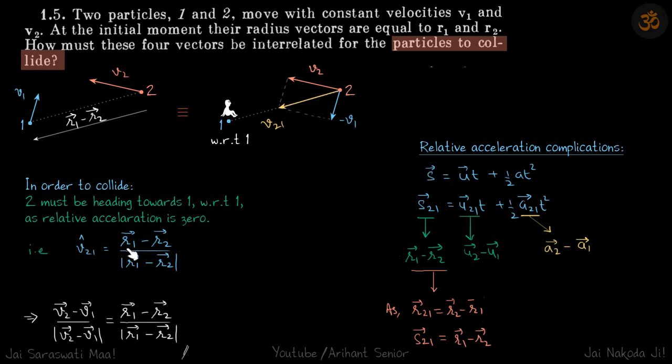So the unit vector of v₂₁ equals (r₁ - r₂) divided by its magnitude. Therefore, v̂₂₁ = (v₂ - v₁)/|v₂ - v₁| = (r₁ - r₂)/|r₁ - r₂|, which is our answer.